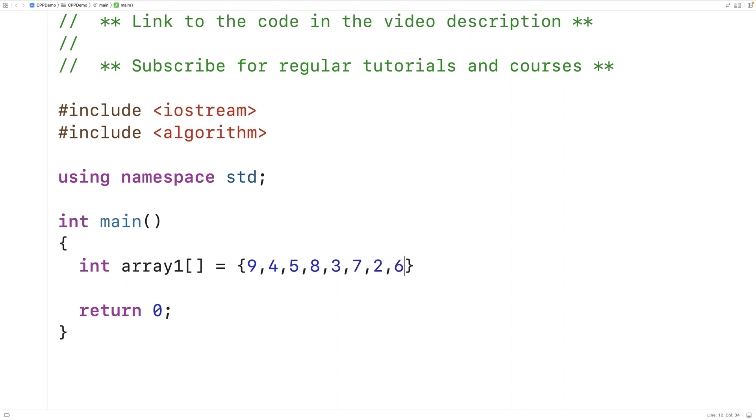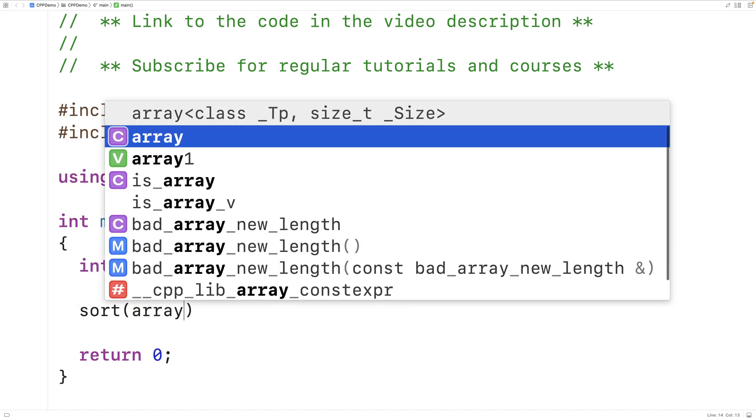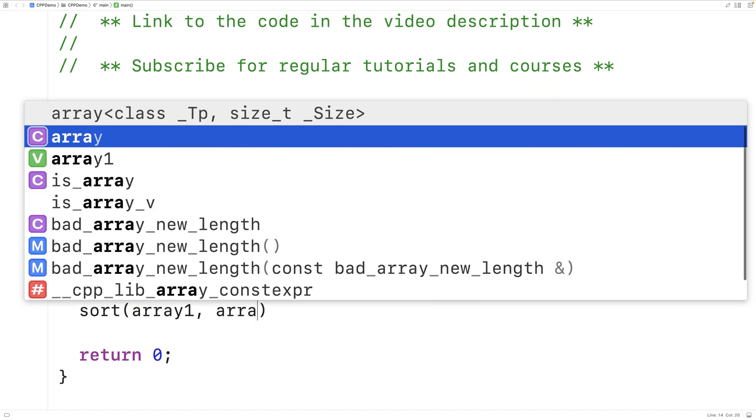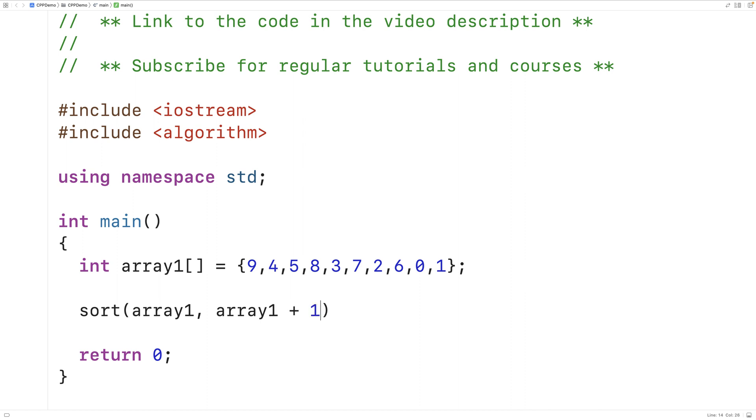So we'll say 9, 4, 5, 8, 3, 7, 2, 6, 0, and 1. And then we'll use the sort function to sort these numbers. So we'll say sort, and then we'll say array1, array1 plus 10.